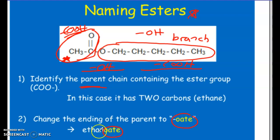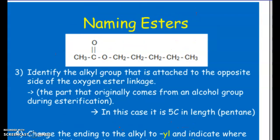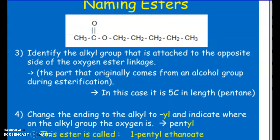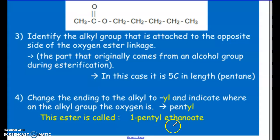So in this case, the ethanoate is our parent. Here we have one, two, three, four, five. So we would have one-pentyl space ethanoate. So notice there is now an official space.